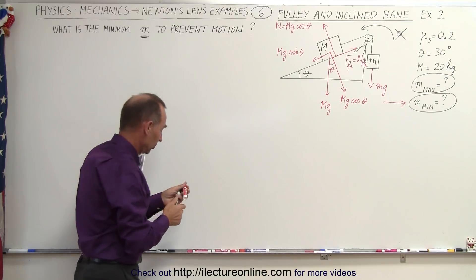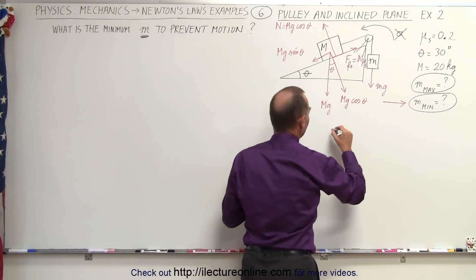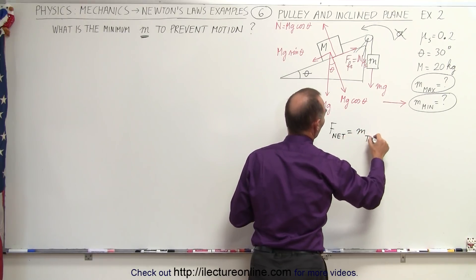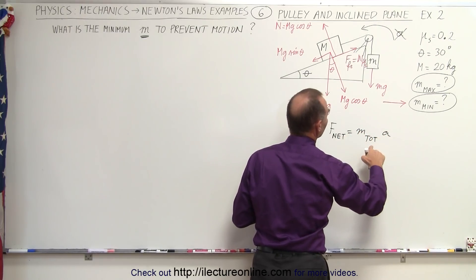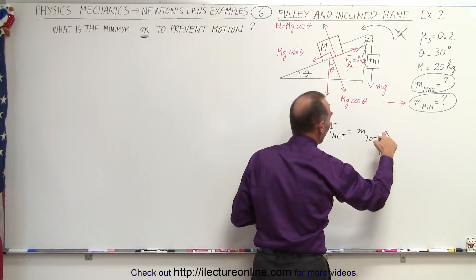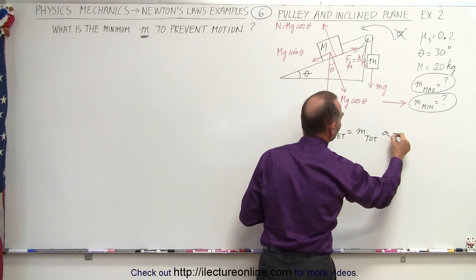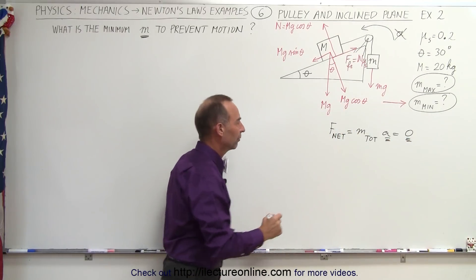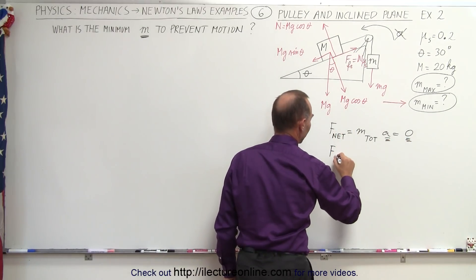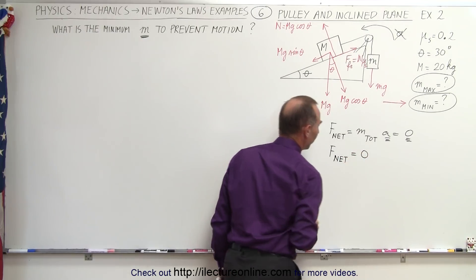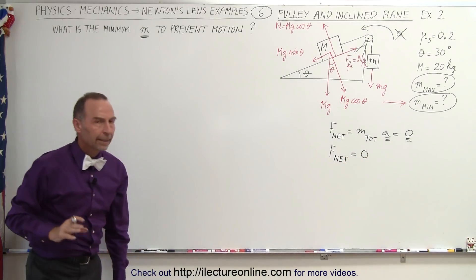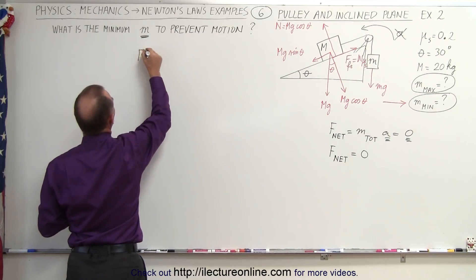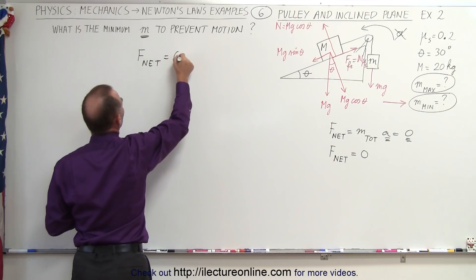Now we're ready to set up our equation. We always start with f net equals mass total times acceleration. But in this case, since we don't want acceleration, acceleration equals zero. Therefore, f net equals zero. Writing out the equation, f net is equal to zero.